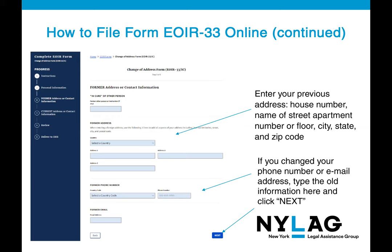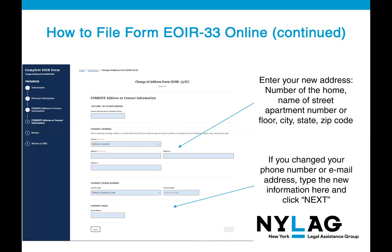On the next page, you will enter your previous address, including house number, street name, apartment number or floor, city, state, and zip code. If you've changed your phone number or email address, you can type the new information there, then click the blue button to proceed. On the following page, enter your new address with the same fields: home number, street name, apartment number or floor, city, state, and zip code. Update your phone number or email if changed, then click the blue Next button.